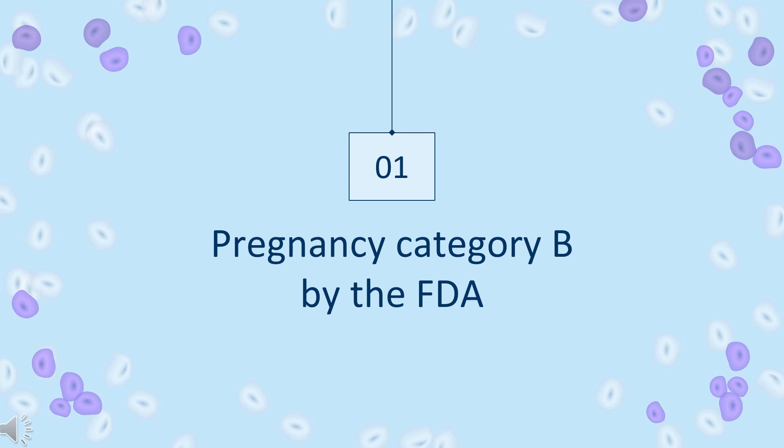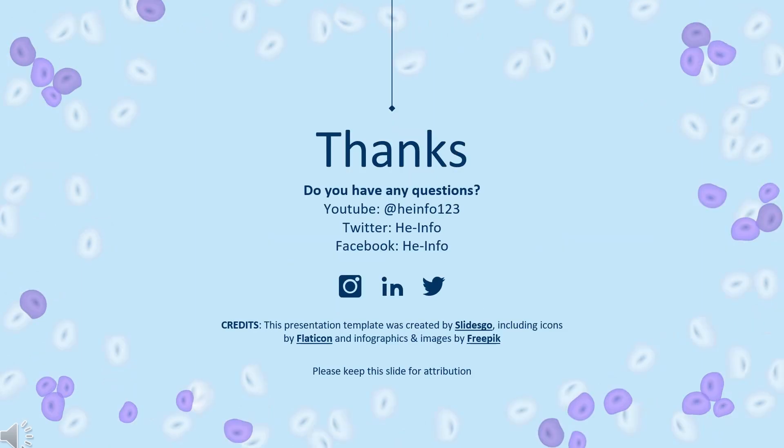Safety Advice: Clotrimazole topical has been assigned to pregnancy Category B by the FDA. Systemic absorption is minimal following topical or vaginal administration.